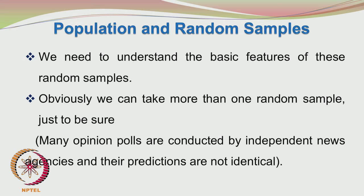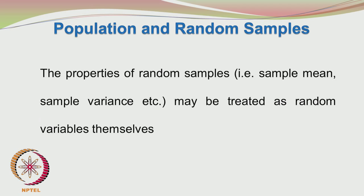We can obviously take more than one random sample just to be on the safe side. For example, many opinion polls are conducted by independent news agencies and their predictions are not identical. Coming back to the random variable, we know that a random variable is described by a probability distribution, and any mathematical combination of random variables will also result in a random variable. So a combination of random variables may also be treated as random variables themselves — for example, the sample mean and the sample variance.